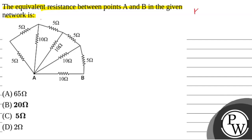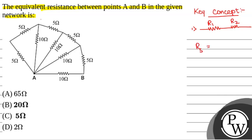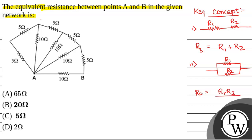First of all, we will see what will be the key concept used to solve this question. The key concept will be: when two resistors are connected in series, R1 and R2, then R equivalent in series, denoted by Rs, is given by R1 plus R2. And similarly, when two resistors are connected in parallel, R1 and R2, then R equivalent in parallel, Rp, is given by R1 times R2 divided by R1 plus R2.